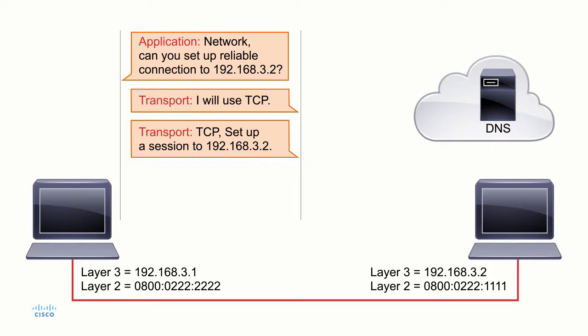You might be wondering how this machine and application know what address the destination is — how do we know that 192.168.3.2 is who we want to talk to? That's where the DNS server comes into play. Let's say we're sending an email that needs to go through a mail server. When we plug in our mail server settings, we plug in a fully qualified domain name — it might be mail.something.com. We resolve that using DNS, which might point us to 192.168.3.2. DNS is just a separate application.